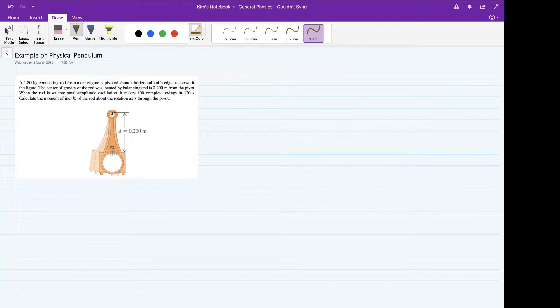When the rod is set into small amplitude oscillation - this is very important, it's emphasized it's a small amplitude oscillation - therefore we can approximate this as a simple harmonic motion. When that is considered, it makes 100 complete swings, meaning complete cycles, in 120 seconds. You are asked to calculate the moment of inertia of the rod about the rotation axis through the pivot.